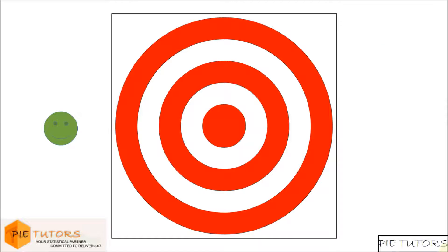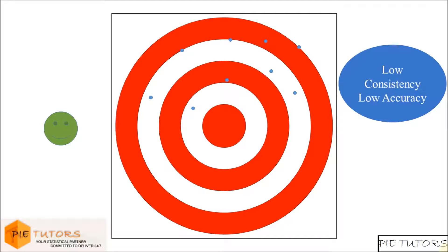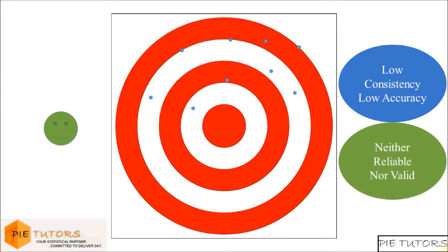The third person fires all his bullets and it is observed that all his bullets hit randomly anywhere on the dartboard. We can see that the firing consistency and firing accuracy for this person is low. This scenario is analogous to an invalid and an unreliable measure.